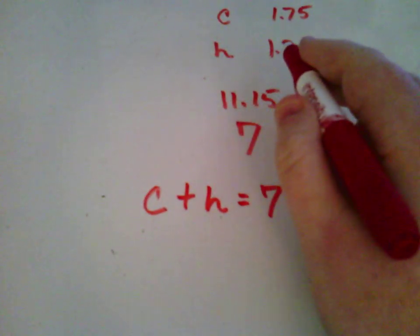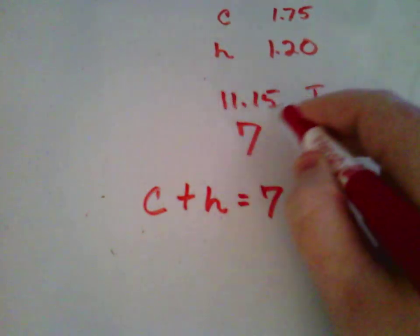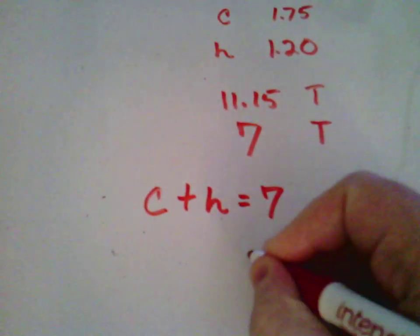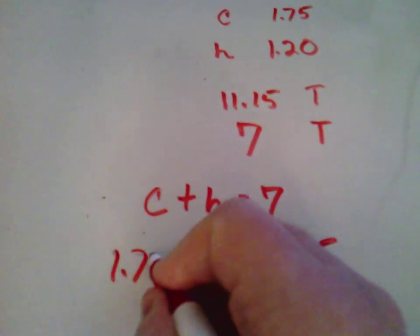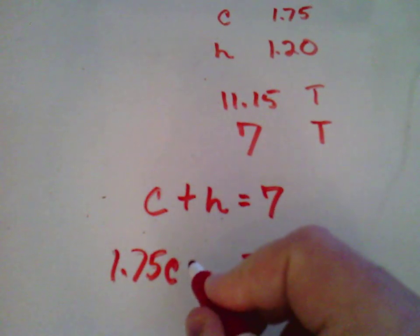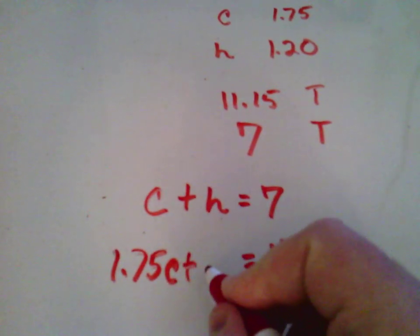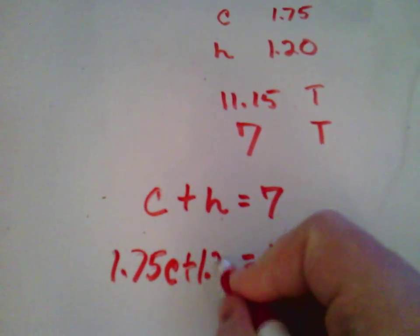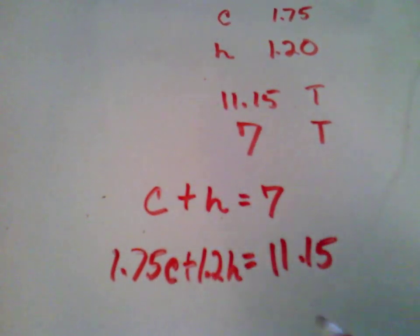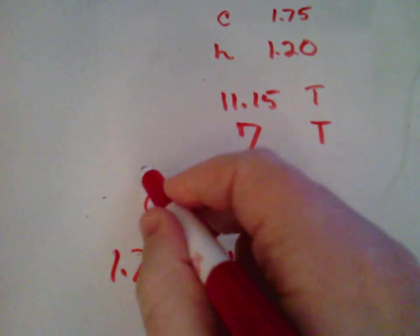The total cost, 11.15. Well, that would be equal to $1.75 times the number of cups of coffee bought added to the cost of each hot chocolate multiplied by the total number of hot chocolates, H. And once again, we have a system here.